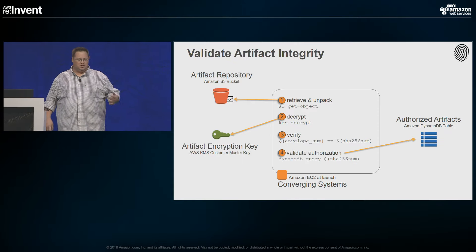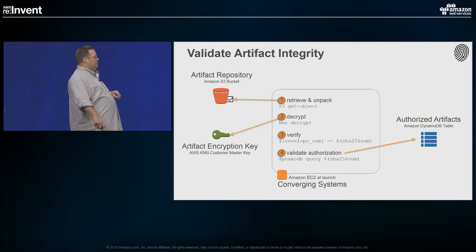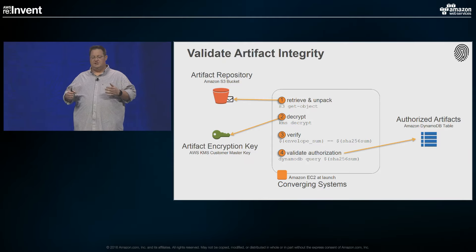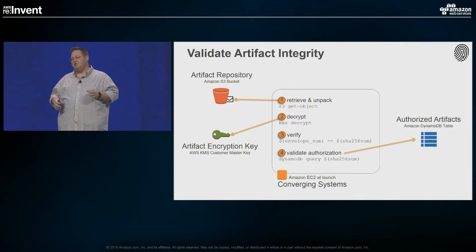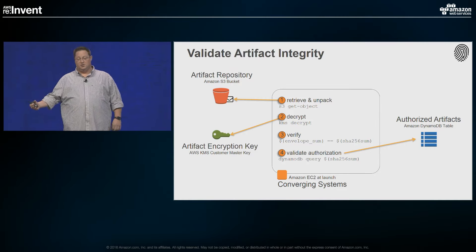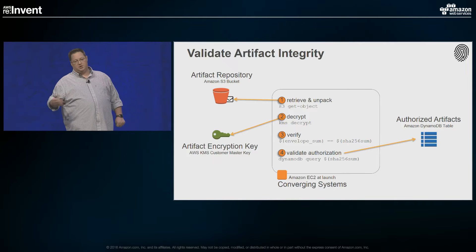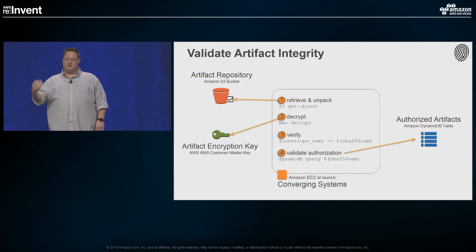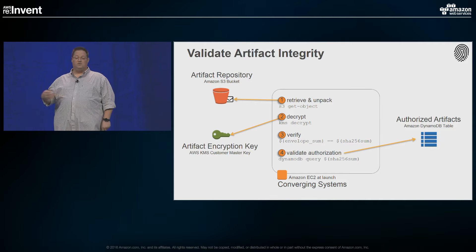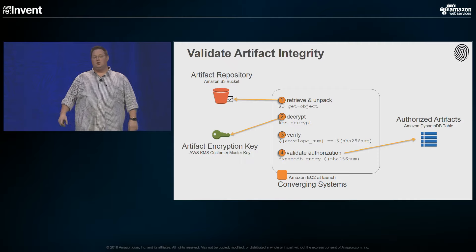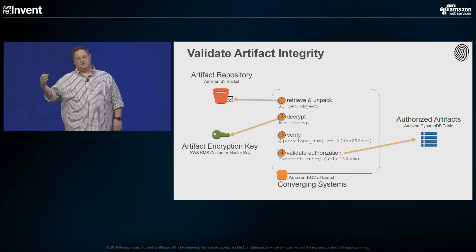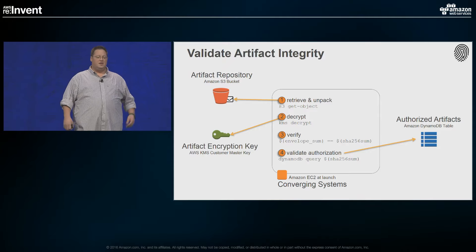We can also add another step — an authorization system that validates integrity. For example, a simple Amazon DynamoDB table. DynamoDB is a database service that does simple key-value object calls. We store in that DynamoDB table a list of SHA sums that we're allowed to install. On the client side, when converging an instance, we make a call and ask: am I allowed to implement this particular artifact? If it's in the table, it returns yes; if not, the build is blocked.